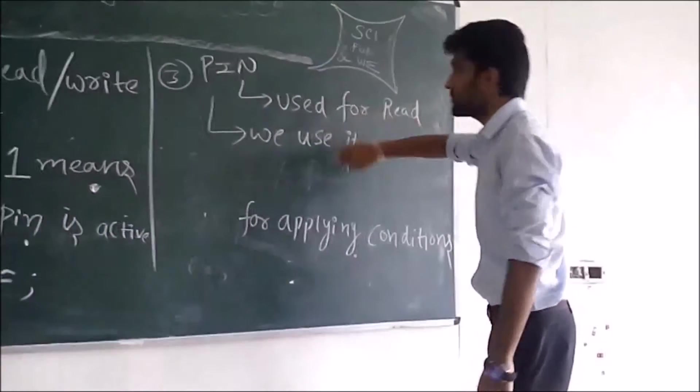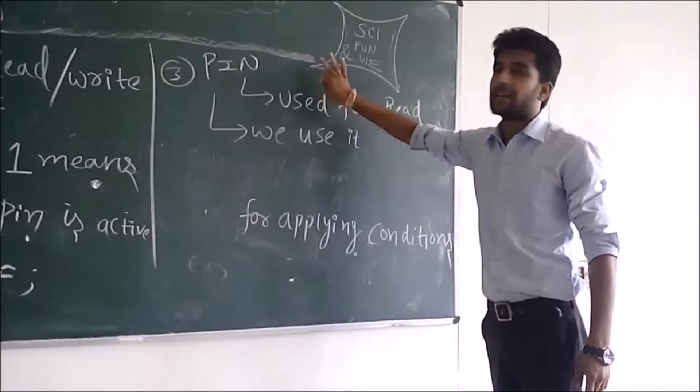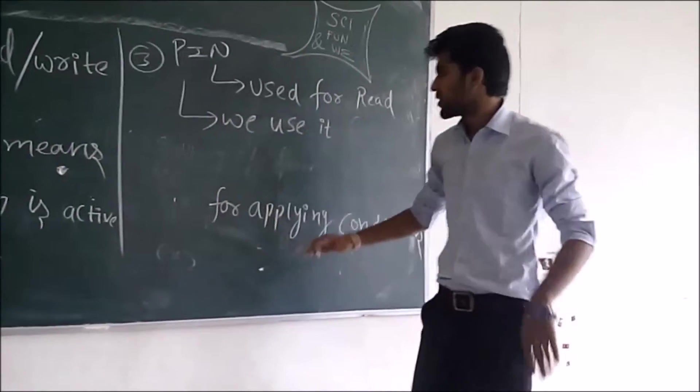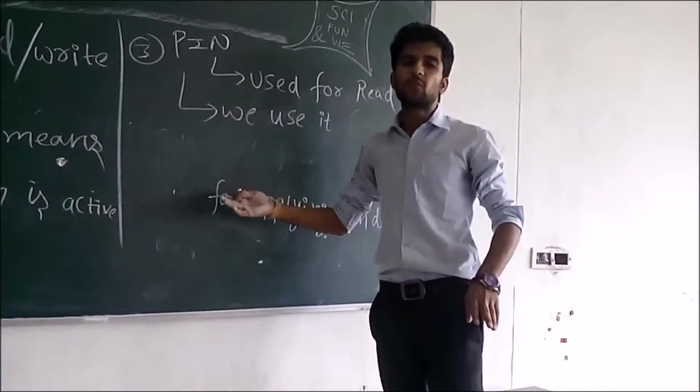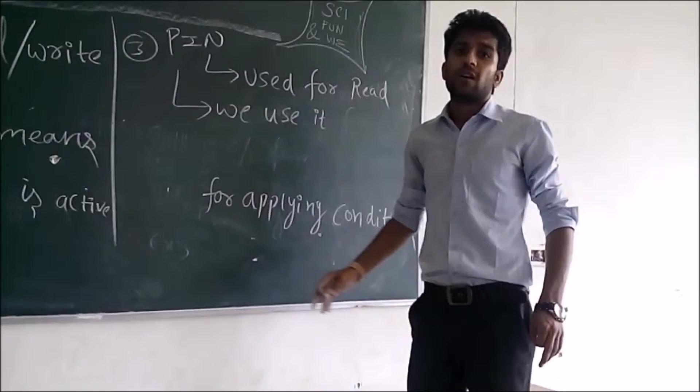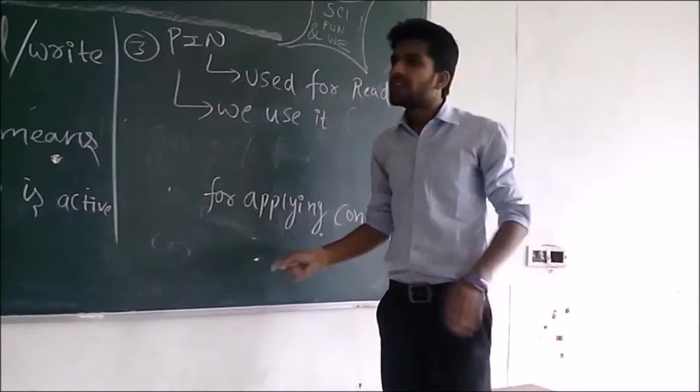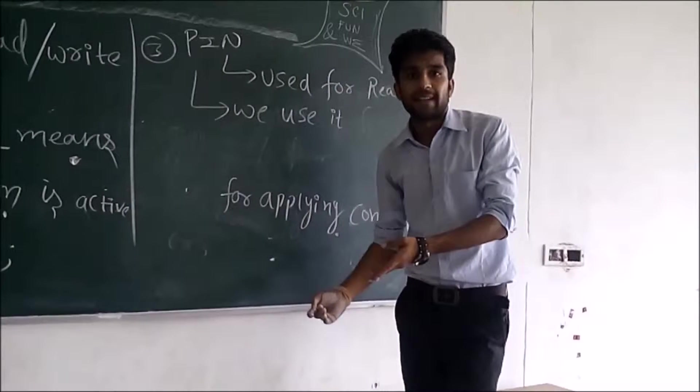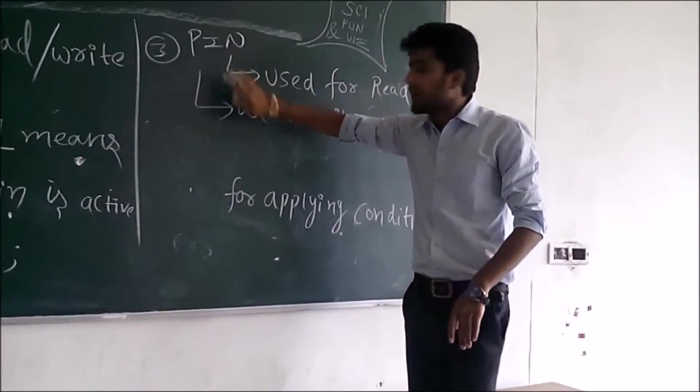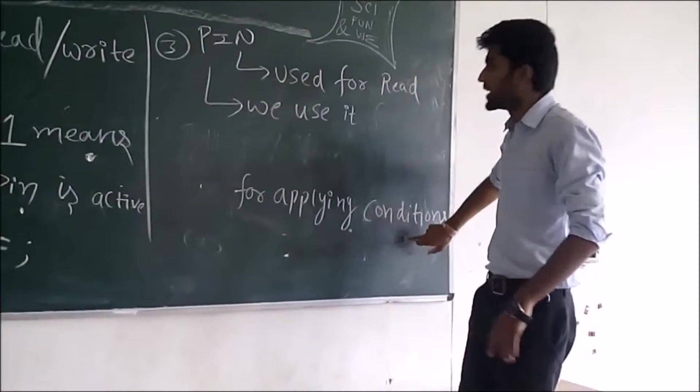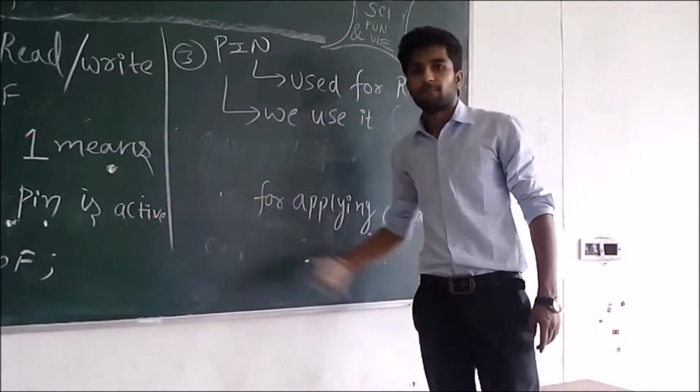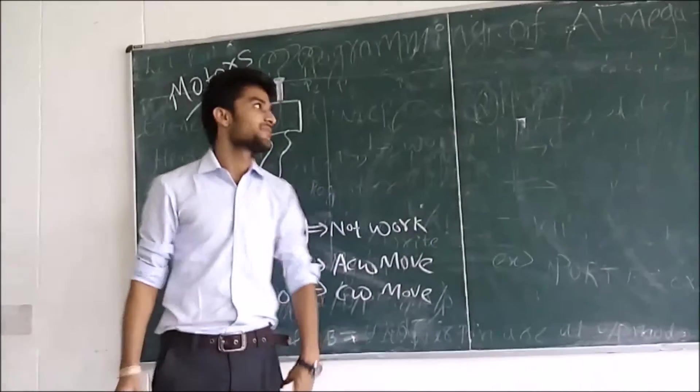Now, come to PIN. It is used for reading purposes. It has a repetitive use. So, mainly it is used when you use sensors or conditions. If there is line follower robot and there is black line or white line, for applying conditions, it is being used. The example I will tell you about in the program.